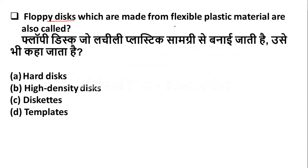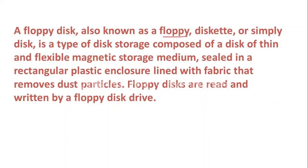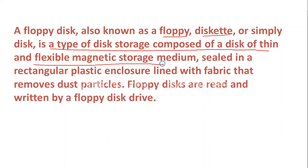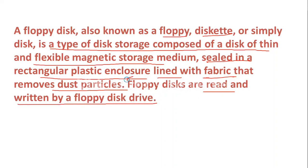Floppy disks, which are made from flexible plastic material, are also called — Option A: hard disk. Option B: high density disks. Option C: diskettes. Option D: templates. The right answer is Option C — floppy disks, which are made from flexible plastic material, are called diskettes. A floppy disk, also known as floppy or diskette, is a type of disk storage composed of a disk of thin and flexible magnetic storage medium, sealed in a rectangular plastic enclosure lined with fabric that removes dust particles. Floppy disks are read and written by a floppy disk drive.